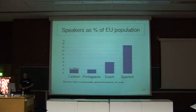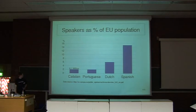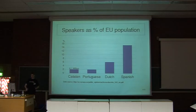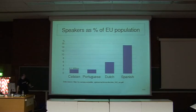In Europe, Catalan is spoken by approximately 9.1 million people. It's at the same level as Portuguese — Portuguese sounds more important because they have their own country, which is not the case for Catalan. Catalonia is not a country. And it's just a bit lower, but not much lower than Dutch. Spanish is about 15% of people here who speak Spanish — Spanish is quite big.